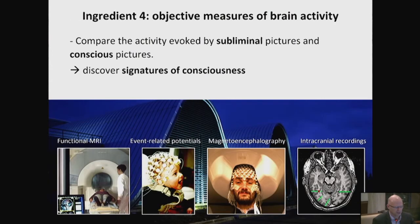The fourth ingredient that has really revolutionized the study of consciousness is the ability to directly look at the brain with all these techniques — in particular, intracranial recordings. I'll now show you some experiments where you can discover signatures of consciousness: objective correlates of subjective processes.